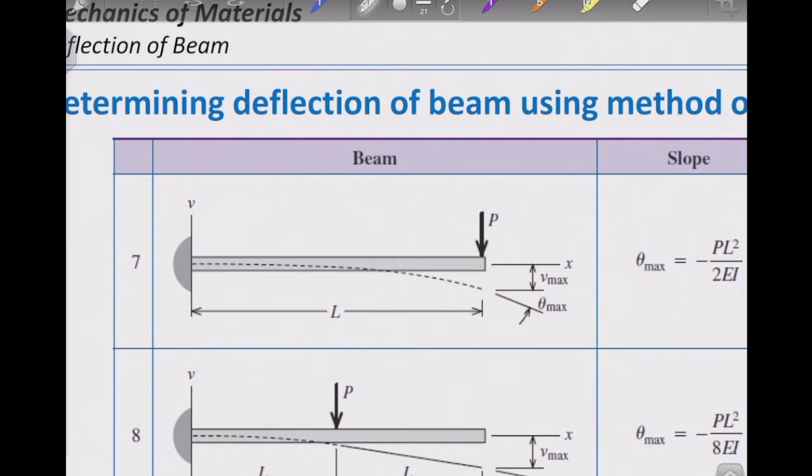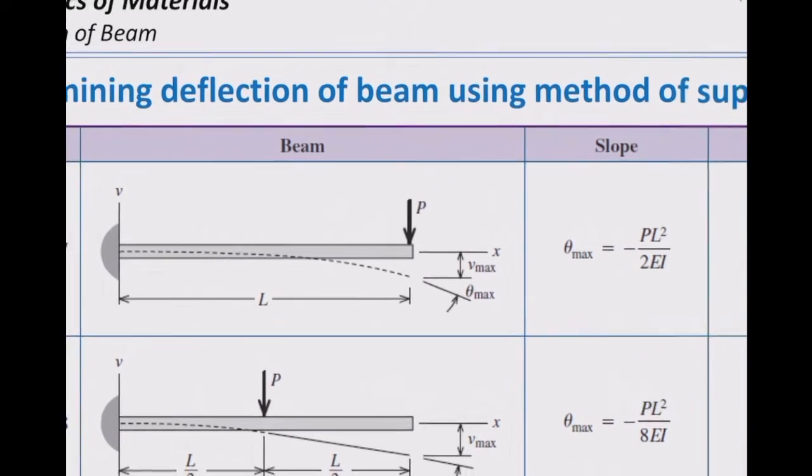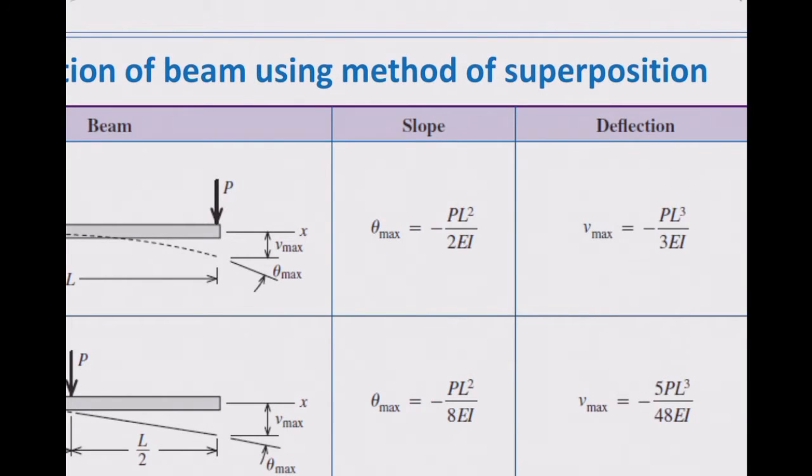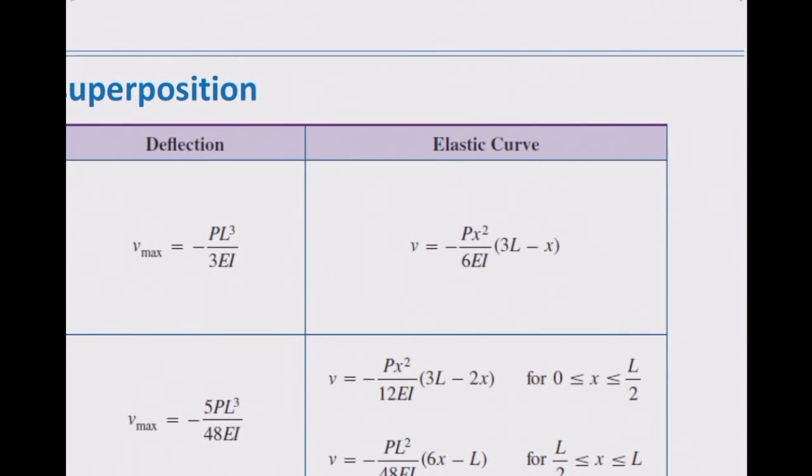So consider this beam. For this beam, we can use the integration method to calculate how much is the value of slope at this end, how much is the maximum deflection at that end, and how much is the function that shows the variation of deflection for that beam.